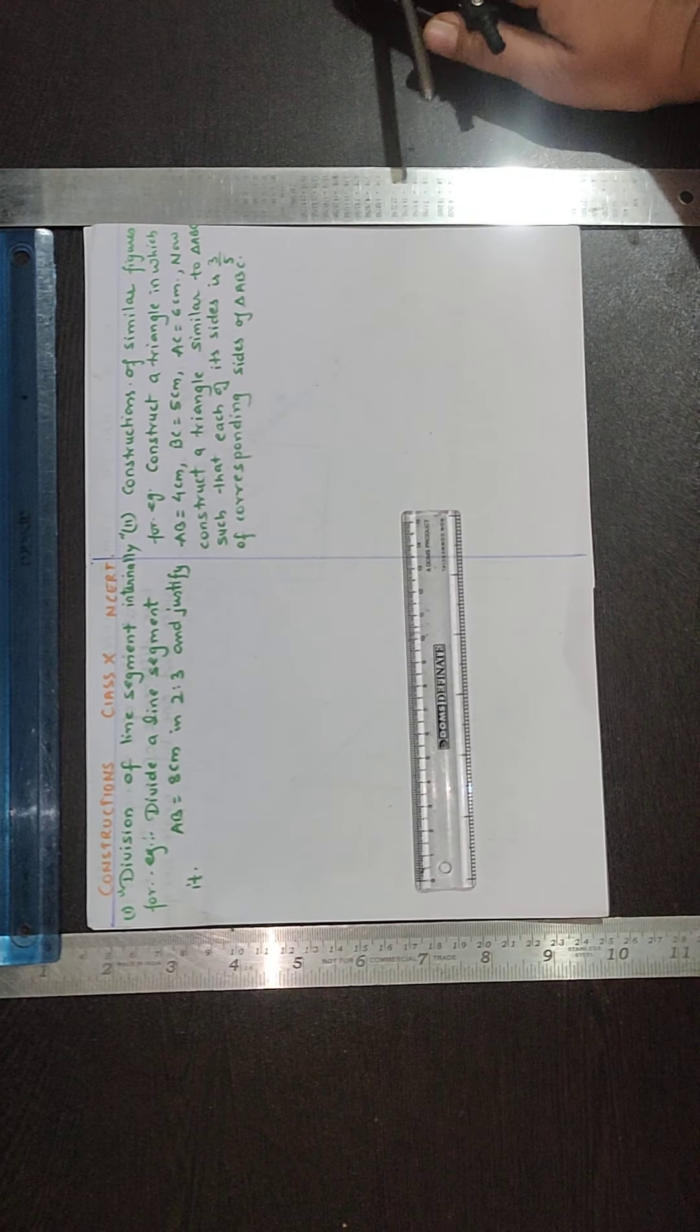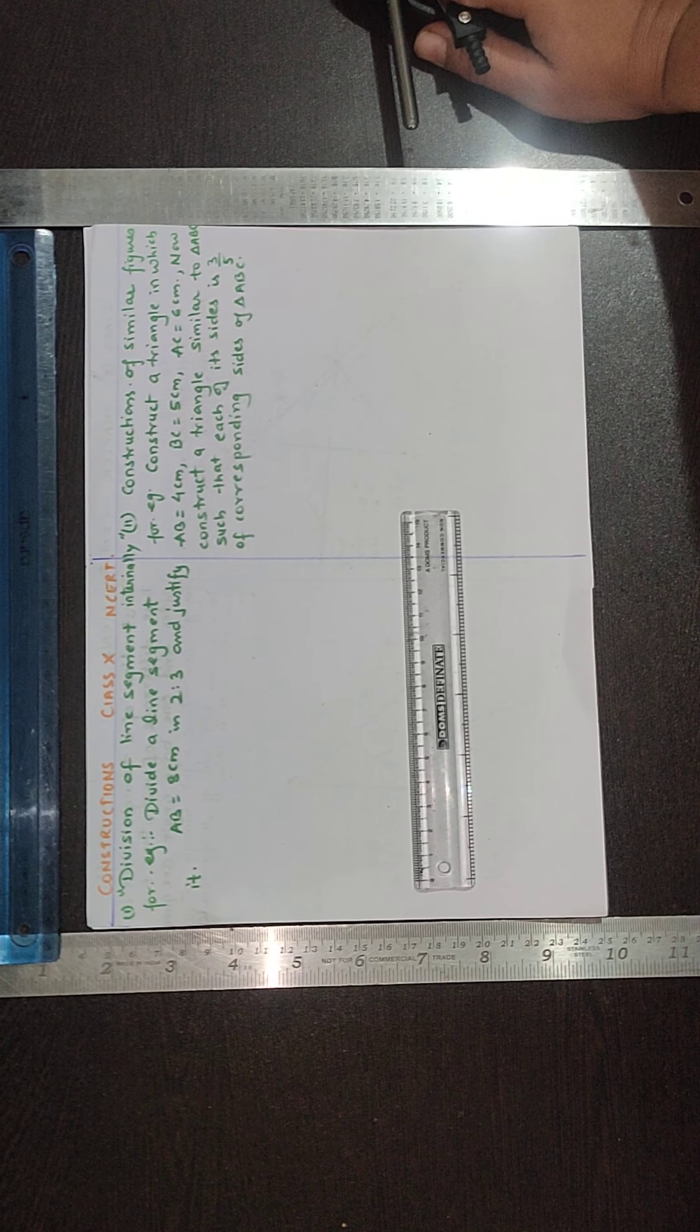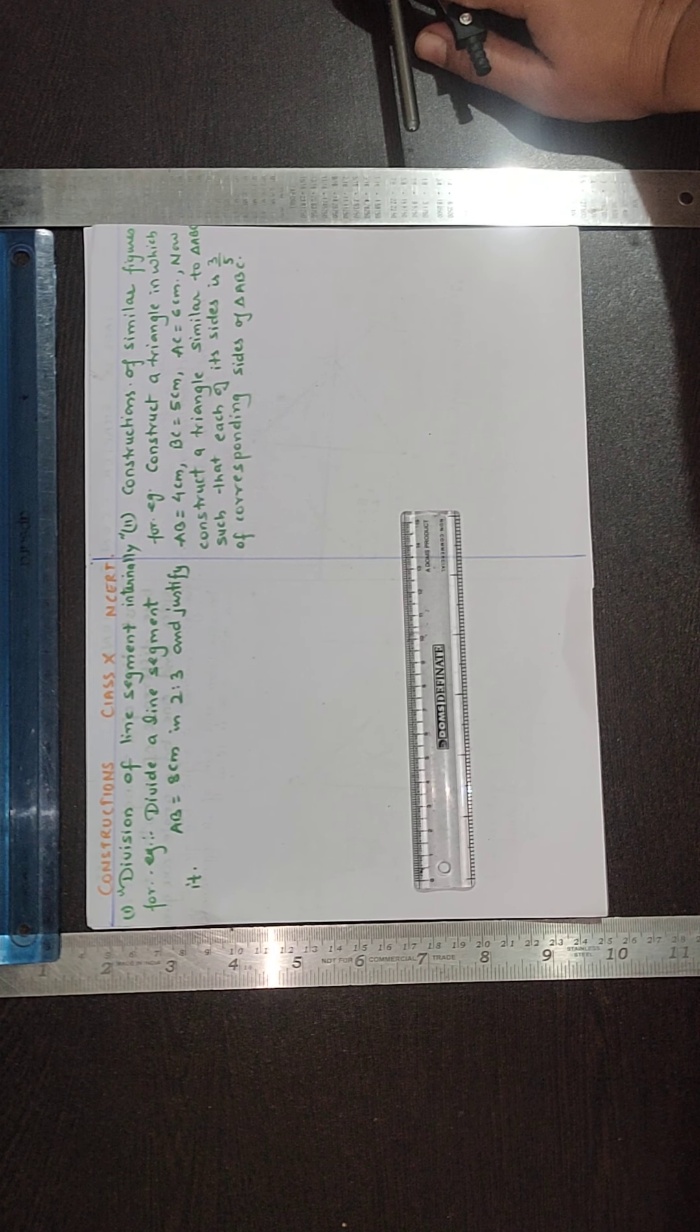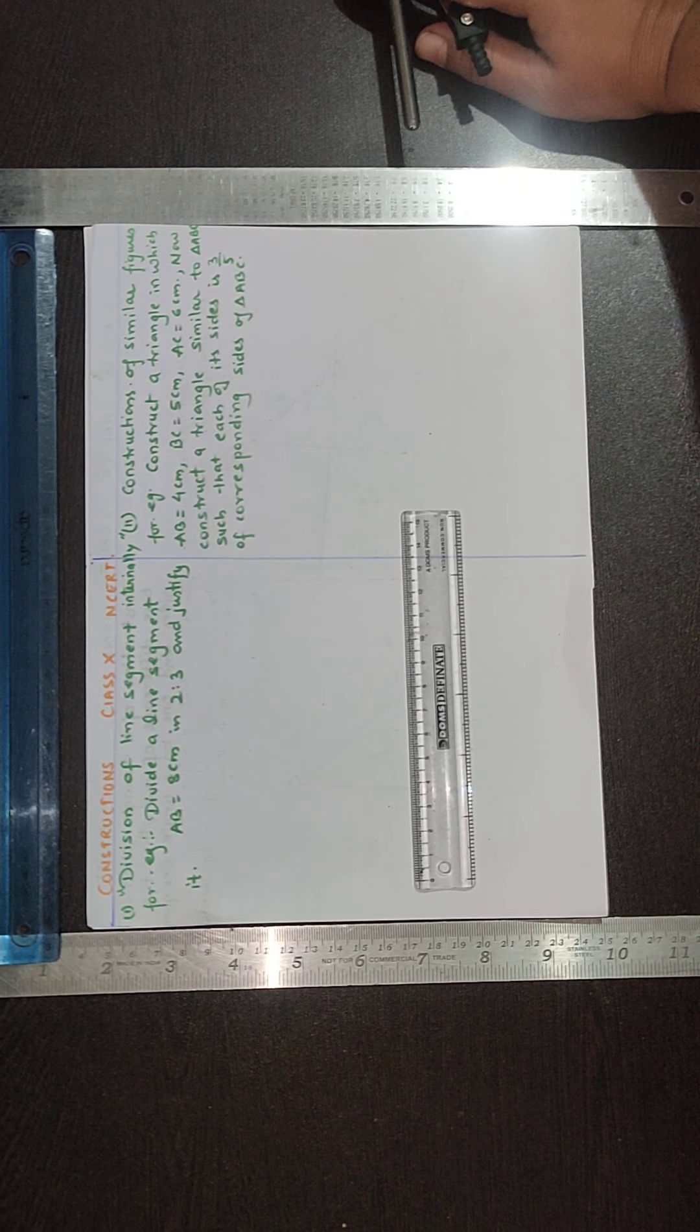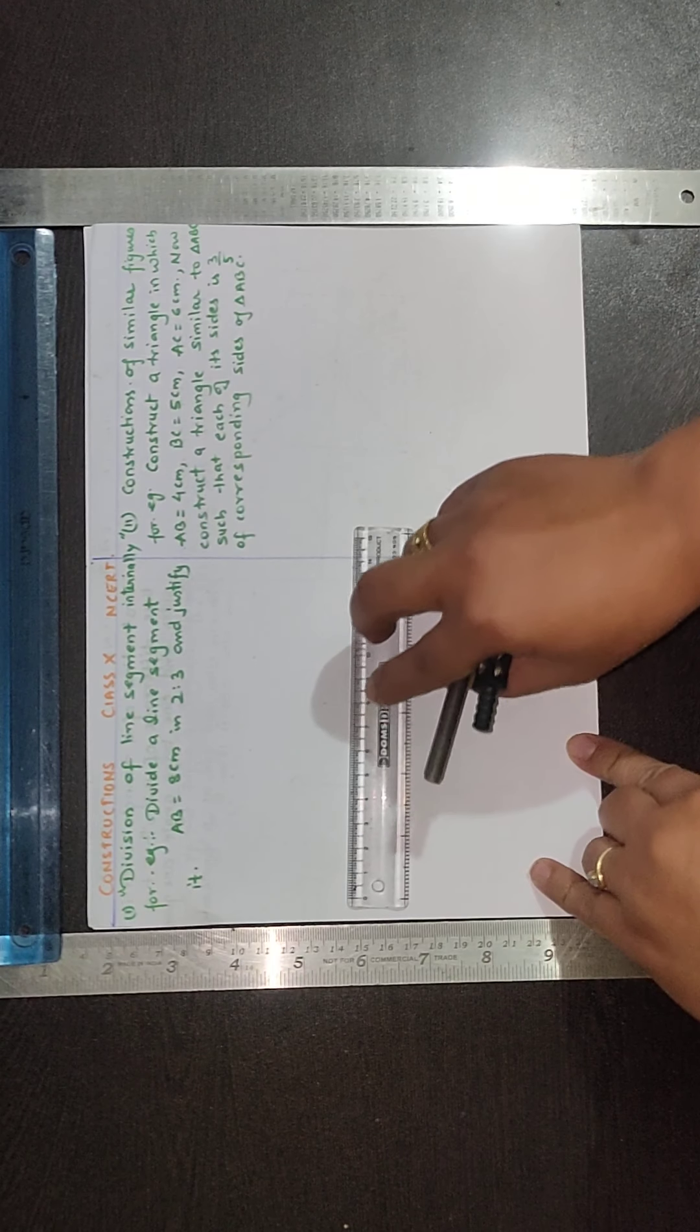First type is division of line segment internally. For example I have taken a question from NCERT only. Divide a line segment AB equals 8 cm in 2 to 3 ratio and justify it.